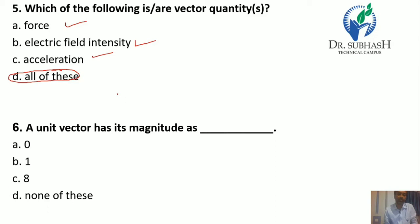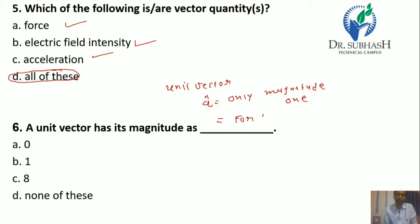Question 6: A unit vector — a unit vector is always represented by a small letter with a hat and has only magnitude 1. It is also used to represent the direction of a vector.